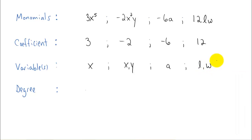Now degree, this is probably a new word to you. The degree of a term is the sum of the powers on the variables. So in this first example, the only power on the variable is 5. So the degree is 5.